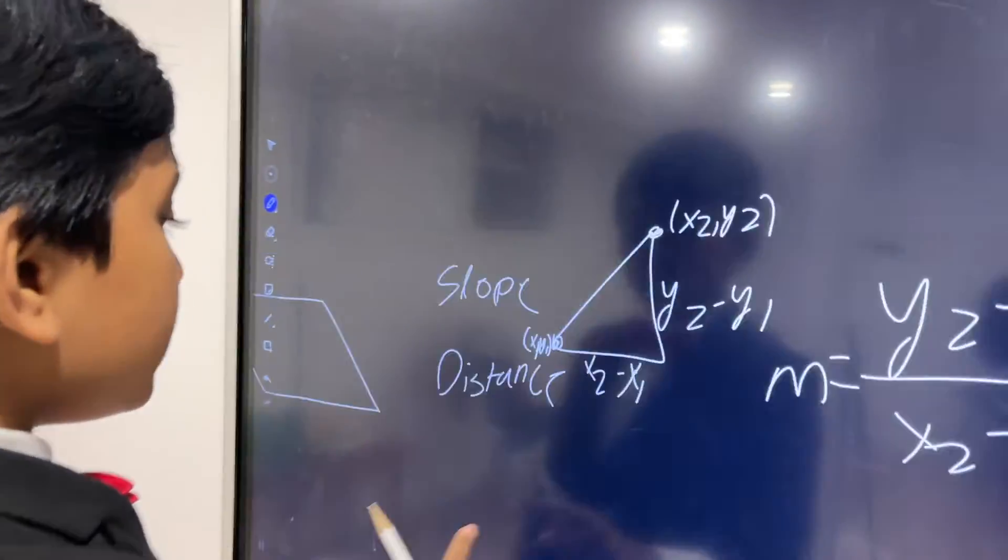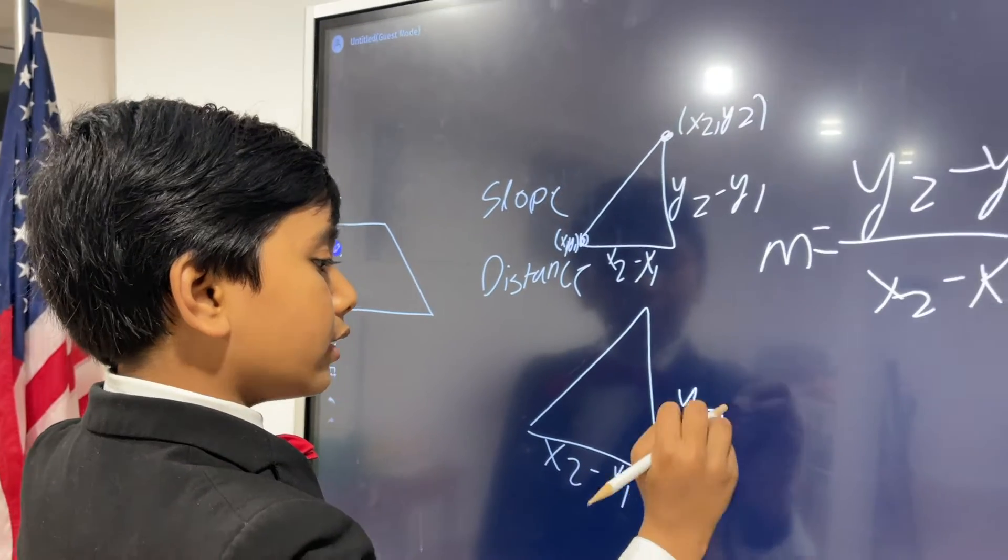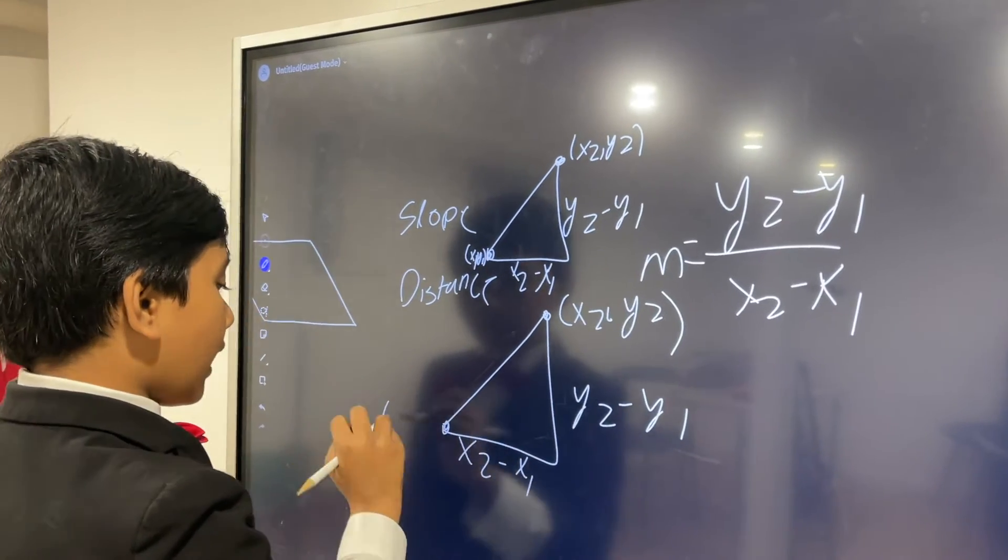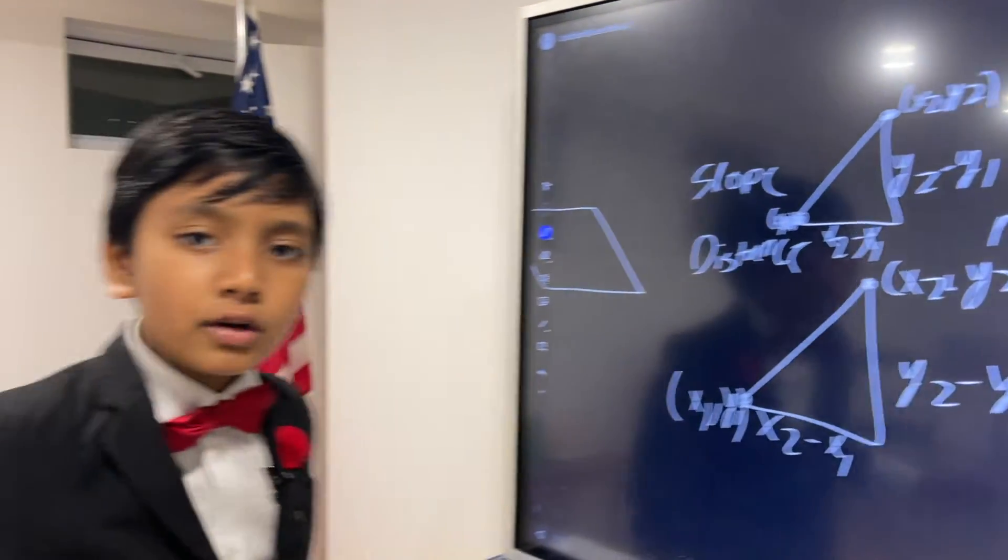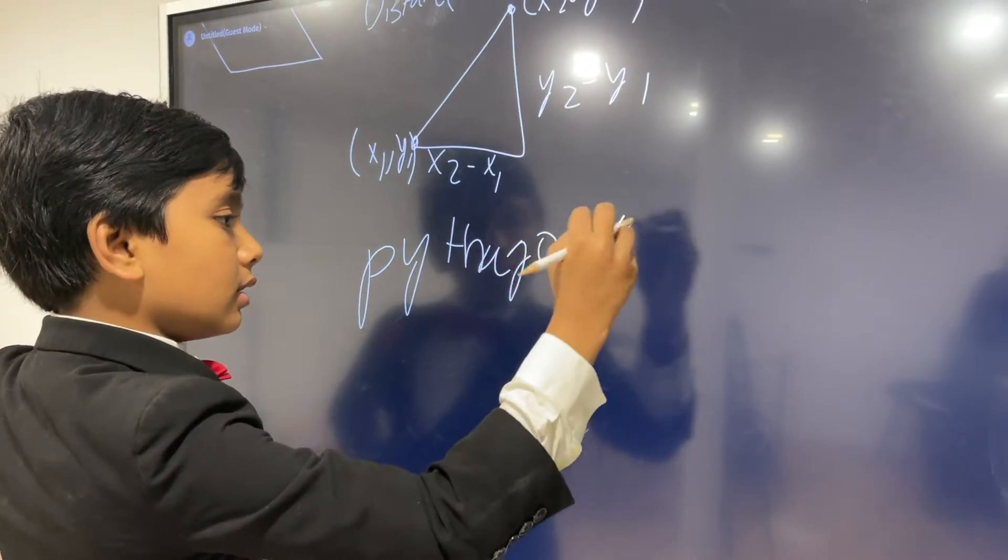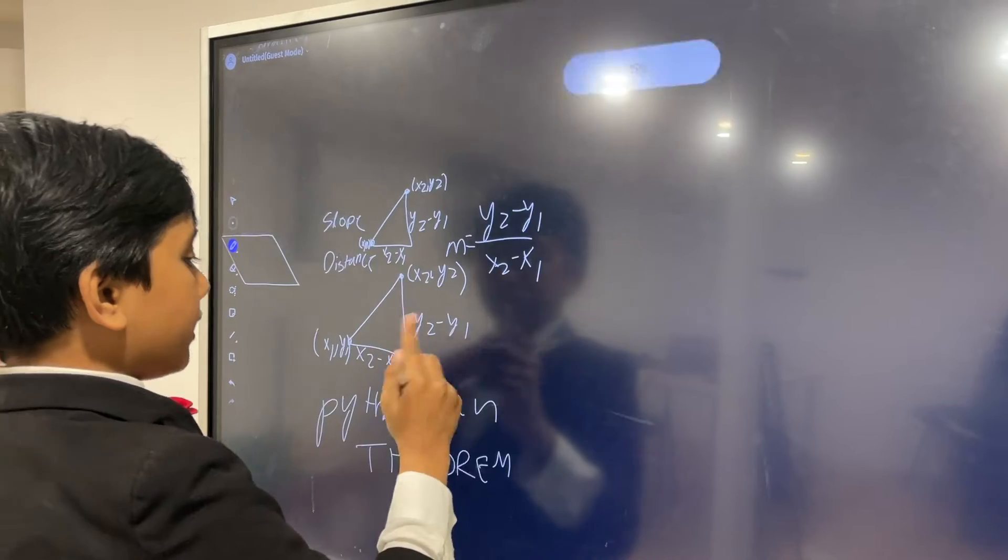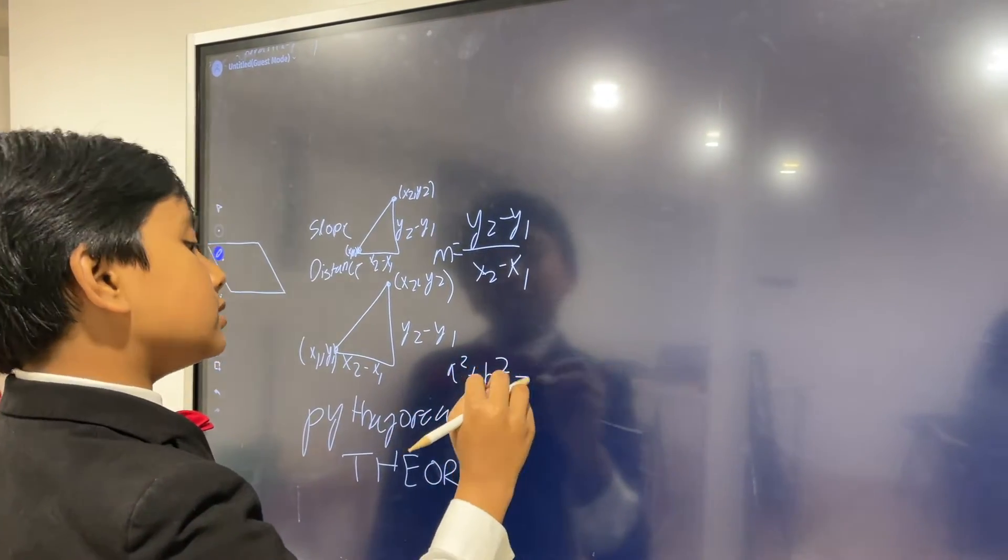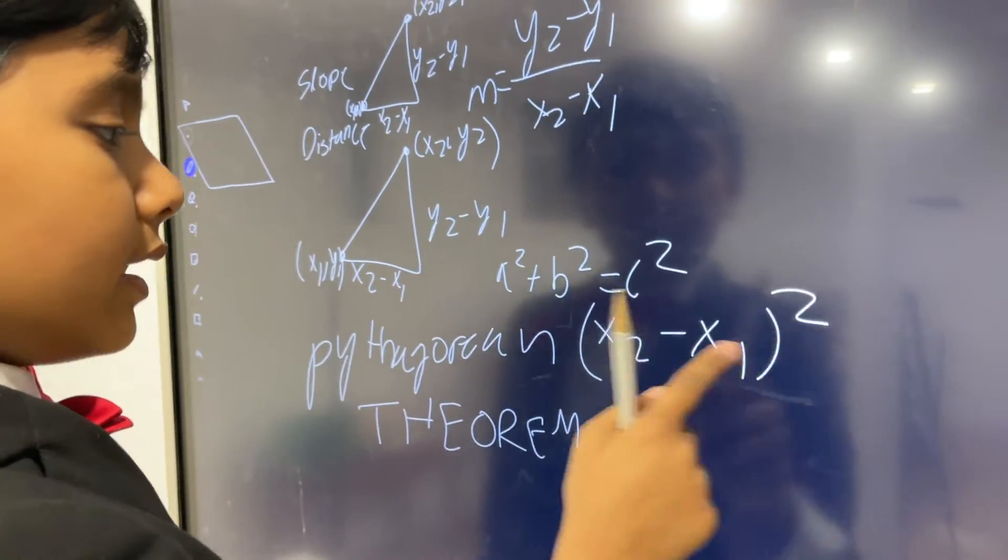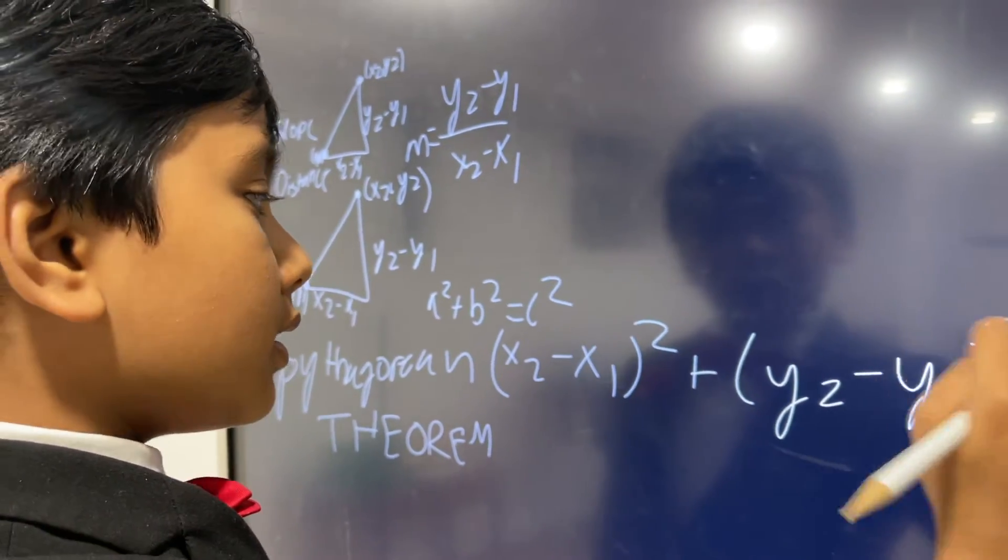So now what about distance formula? Well, it essentially has the same concept: x2 minus x1, y2 minus y1, then we have x2, y2 and x1, y1. However, this time we have to use the Pythagorean theorem. If we have a squared plus b squared equals c squared, then that would be assuming x2 minus x1 is a, so x2 minus x1 squared plus y2 minus y1 squared equals c squared.